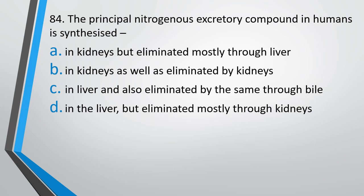Question number 84. The principal nitrogenous excretory compound in humans is: synthesized in kidneys but eliminated mostly through liver; synthesized in kidneys and eliminated by kidneys; synthesized in liver and eliminated through bile; or synthesized in liver but eliminated mostly via kidneys. The correct answer is option D — synthesized in liver but eliminated mostly via kidneys.